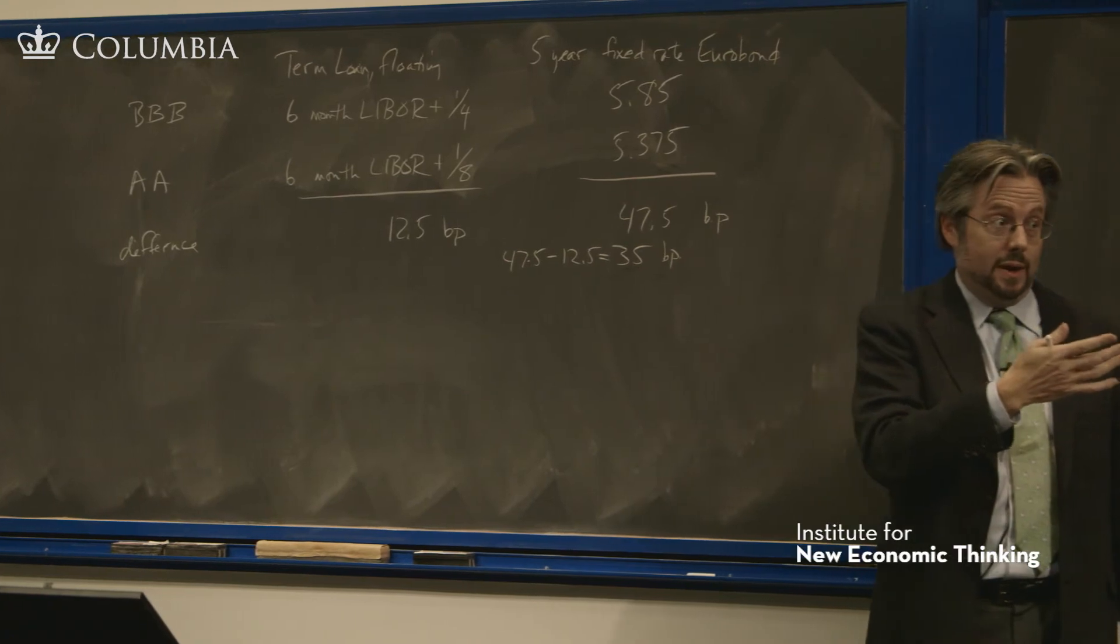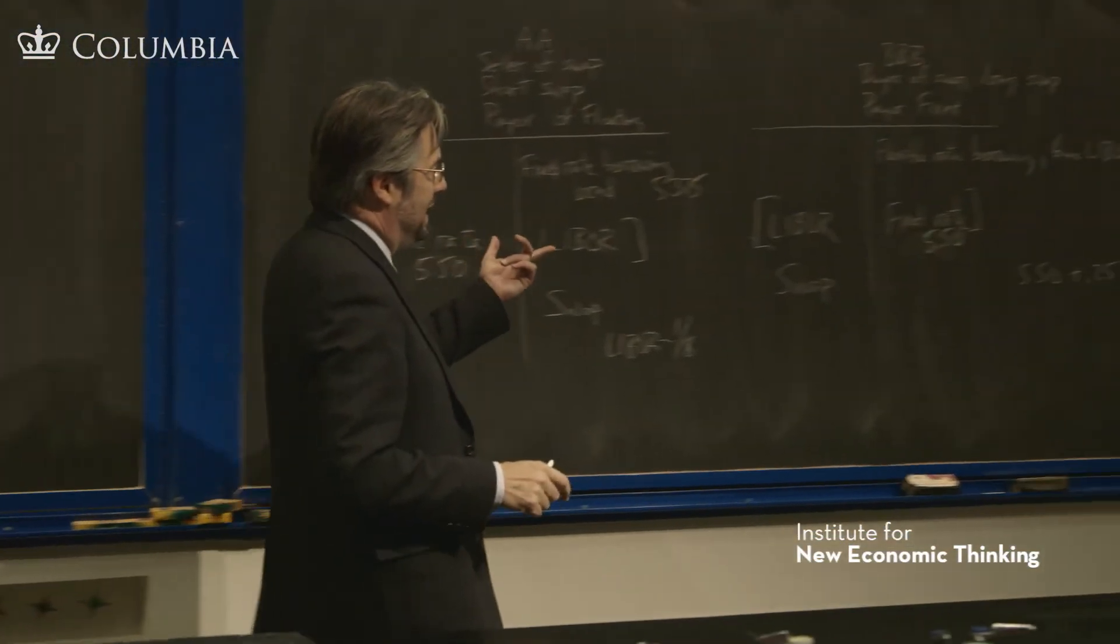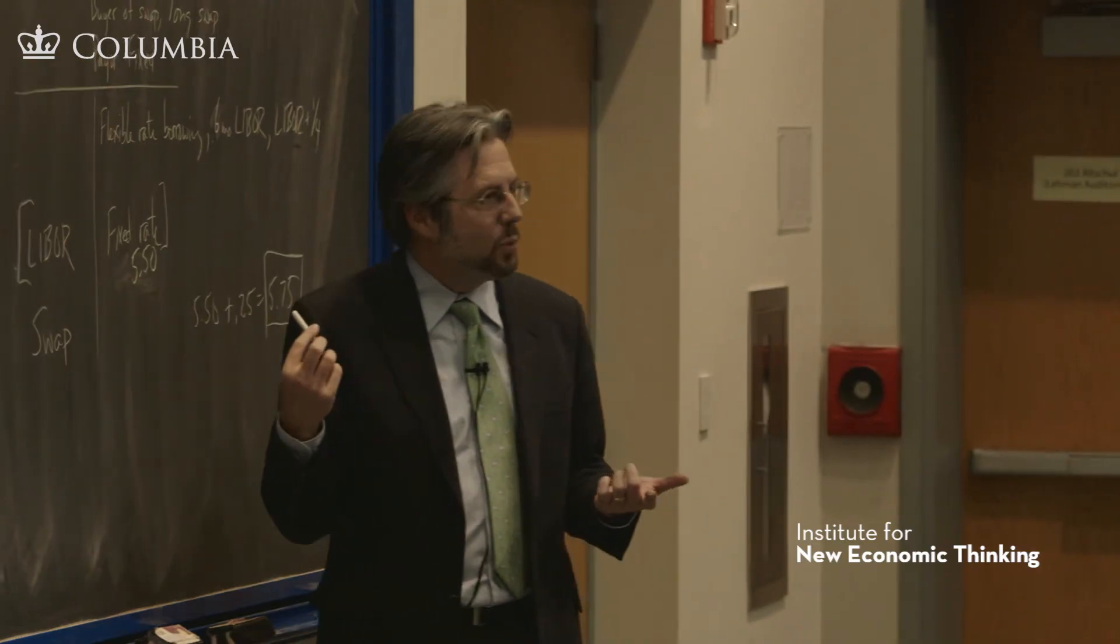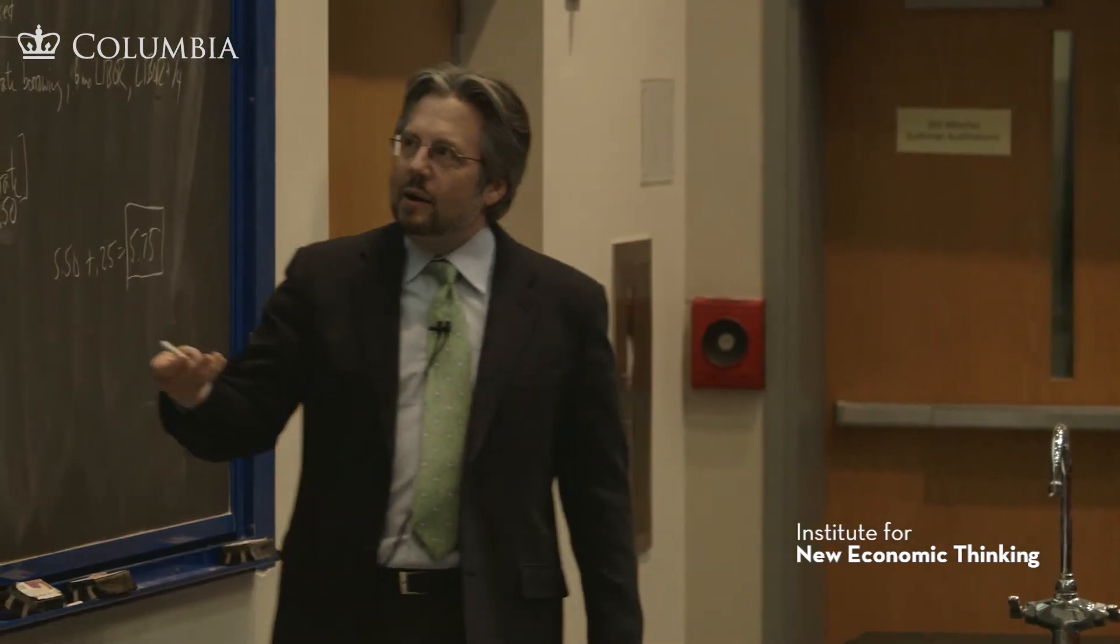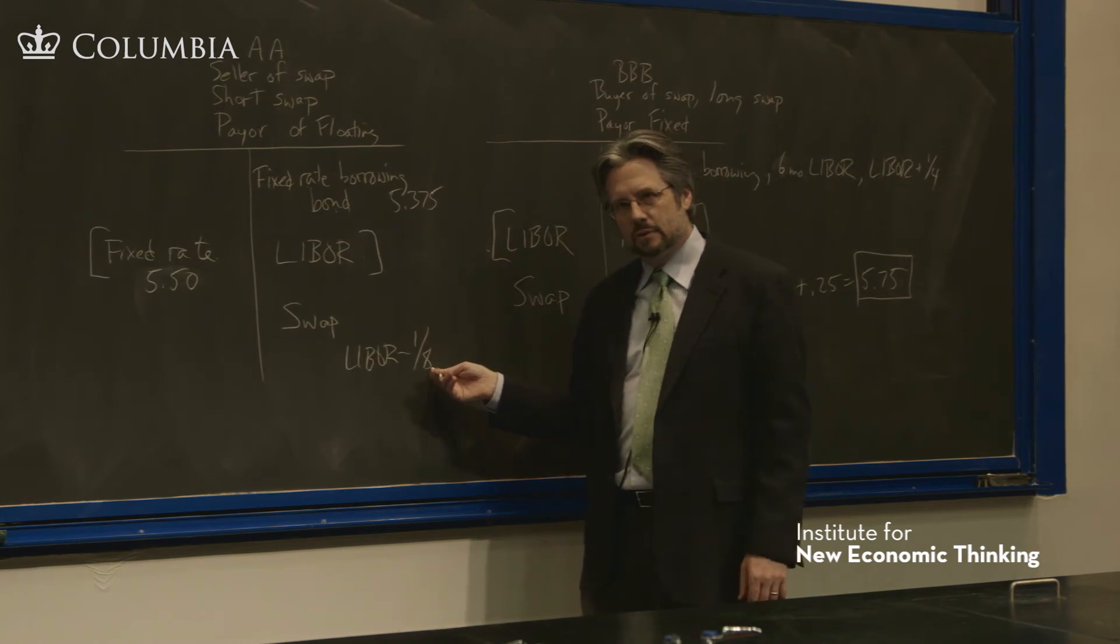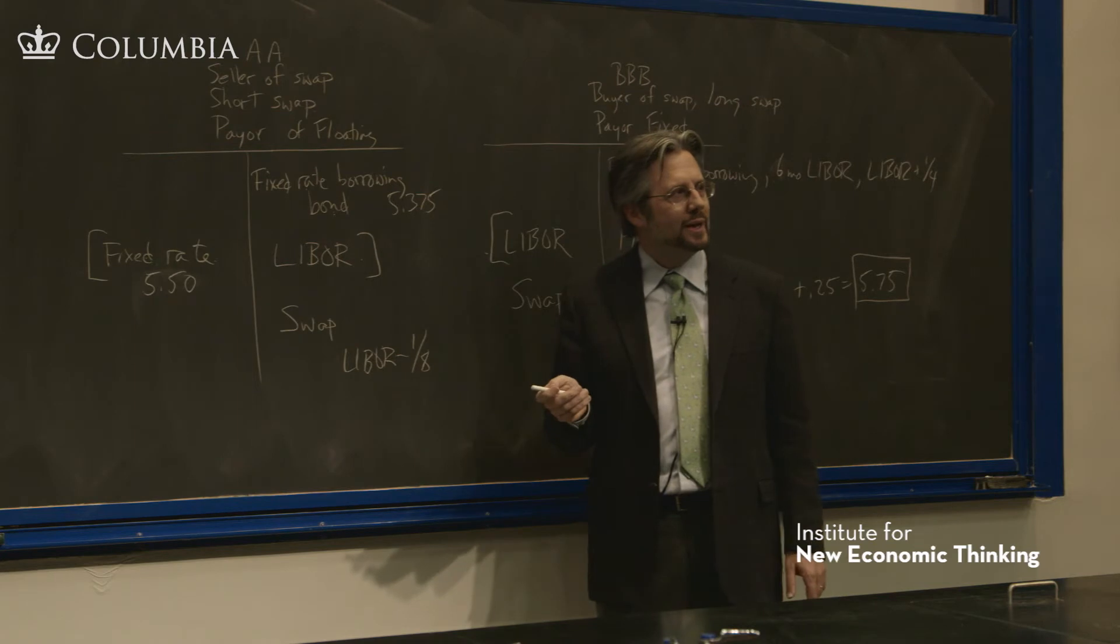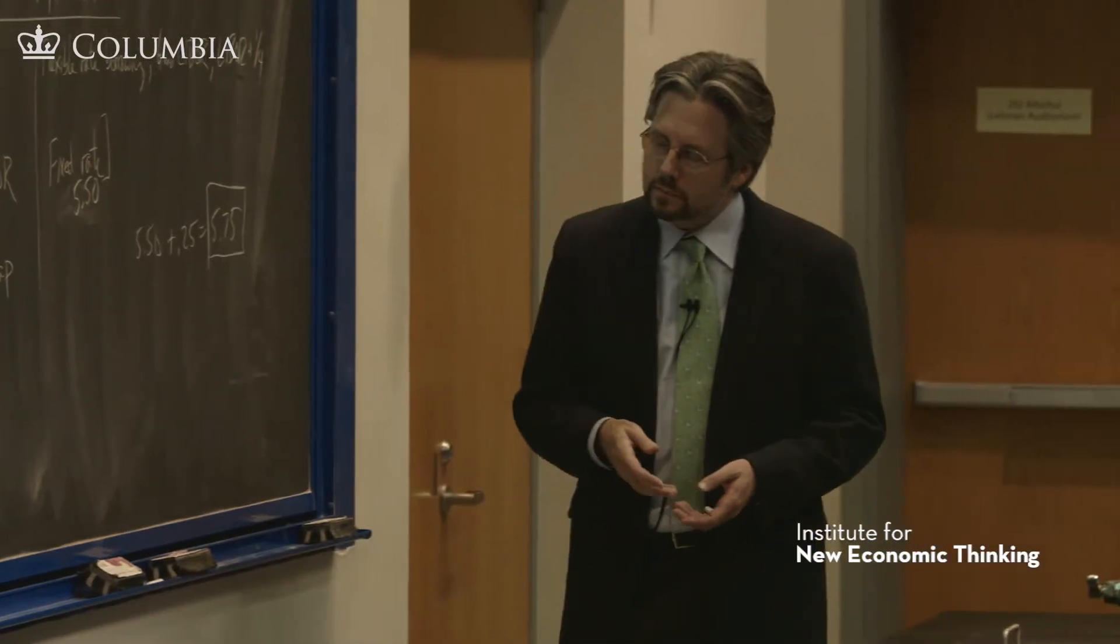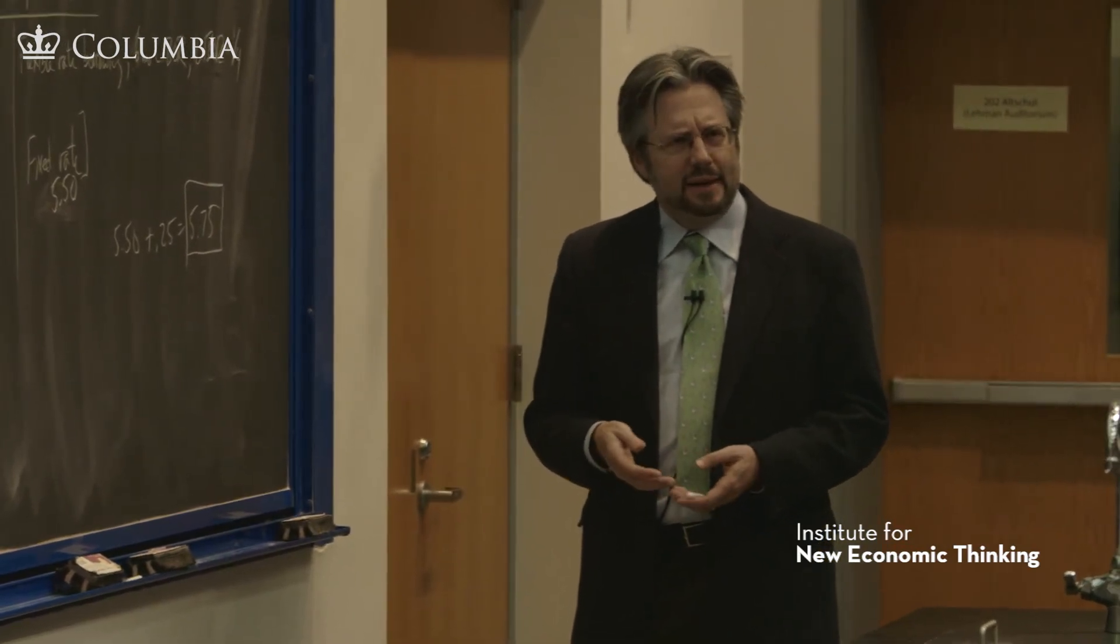This is just an example, but it shows why people do this, why firms would ever want to swap given that one of them has an absolute advantage. It allows AA to get funding at less than LIBOR, less than the standard-going rate. Why are they getting funding at less than the standard-going rate? There must be some exposure they have here.